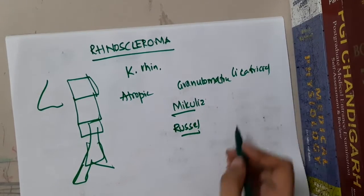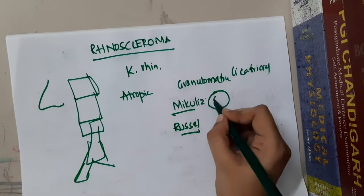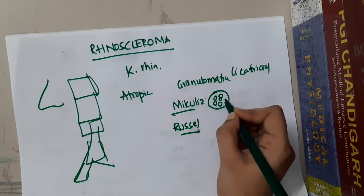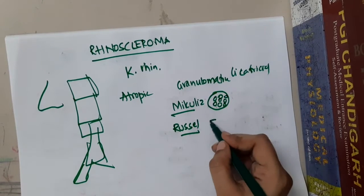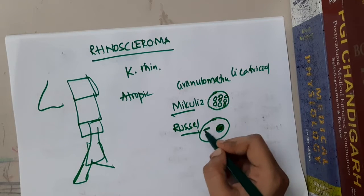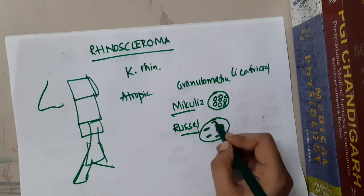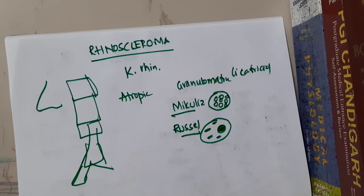What are Mikulicz cells? These are cells with multiple vacuoles. What are Russell's bodies? These are plasma cells with homogenous inclusions, called Russell's bodies.